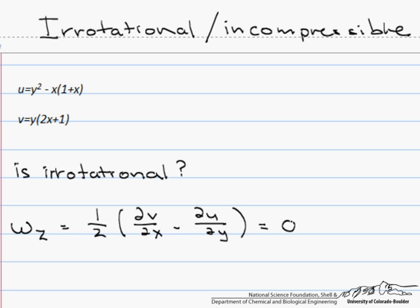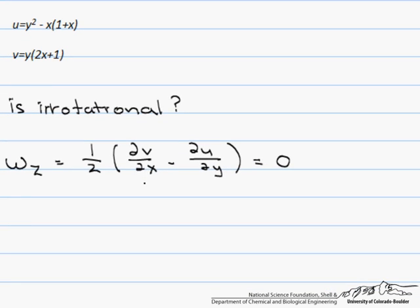And notice that what this is is rotation in the z plane. And what we are looking at are what are called cross derivatives, dv dx minus du dy. So let's find dv dx, and if we look at dv dx, we find that the derivative is 2y.